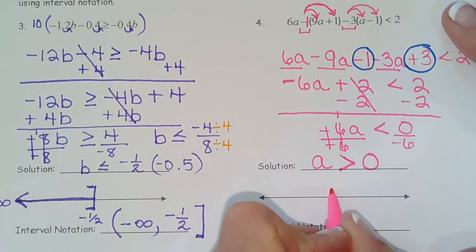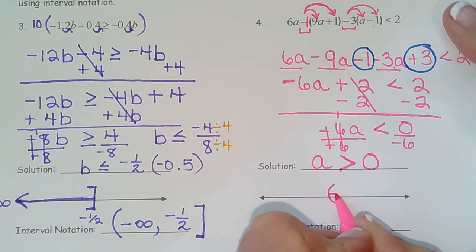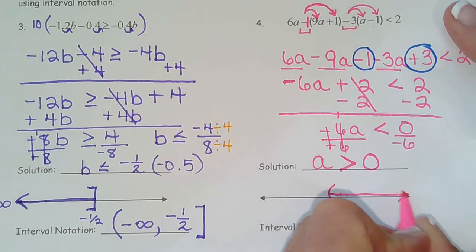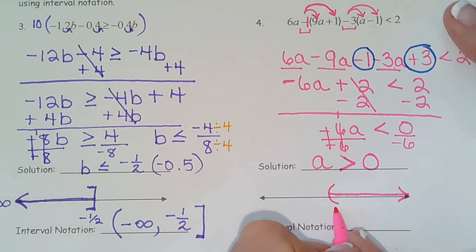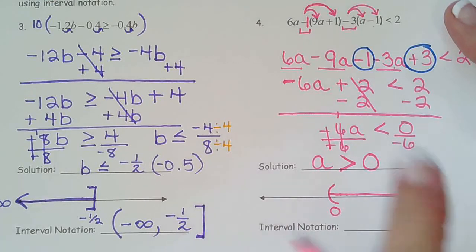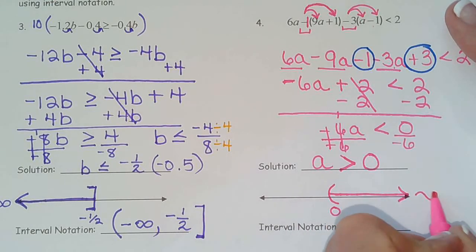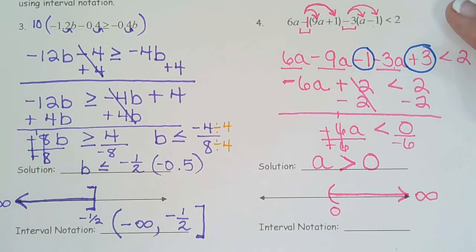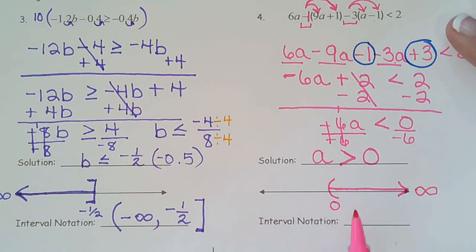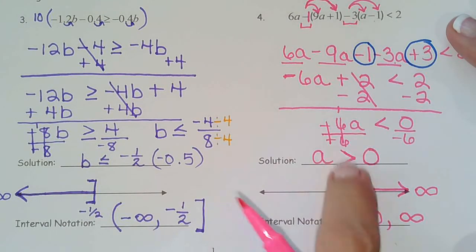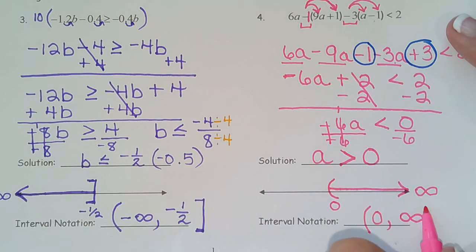So greater than shades to the right, because there's no equal sign, we use a parenthesis. So our first endpoint is zero. And since it shades to the right, that would be positive infinity. And last, our interval notation. Keep your two endpoints in the same order as the number line. Zero gets a parenthesis because there's no equal. And infinity always gets a parenthesis.